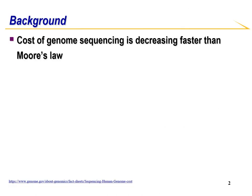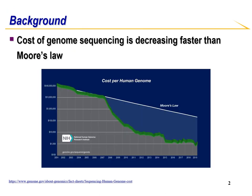Genome sequencing is one of the most important applications in the health industry. It allows healthcare professionals to identify and treat specific health issues that may arise in the patient. In fact, the cost of genome sequencing has decreased faster than Moore's law. Roughly two decades ago, it would cost one million dollars to sequence the human genome. Now it costs roughly one thousand dollars.